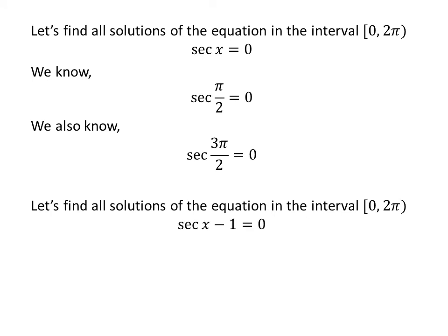Now, let us find the solutions to the equation sec x minus 1 equals 0 in the period 0 to 2π. Taking minus 1 from the left hand side to the right hand side gives us sec x equals 1. We know the value of sec(0) is 1.